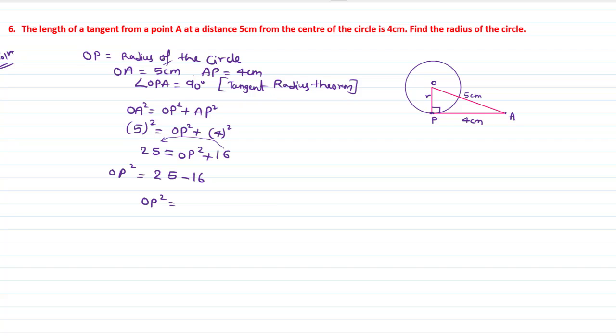OP square is equals to 25 minus 16 which is equals to 9. Therefore OP is equals to square root of 9. OP is equals to 3 cm. Therefore radius of the circle is 3 cm.